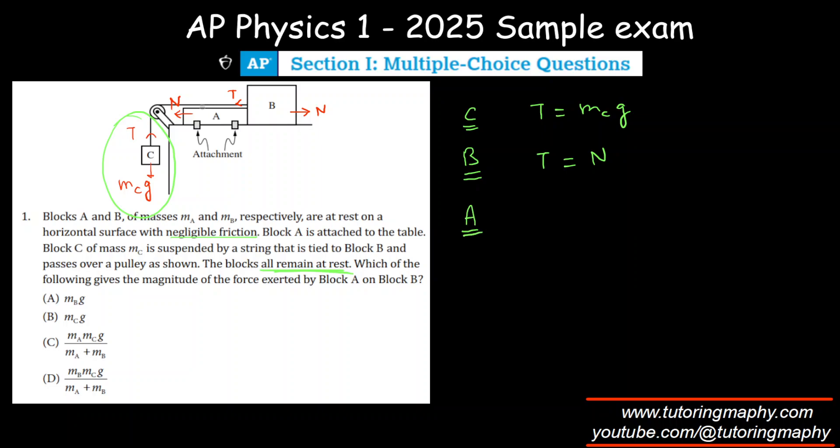And at A, actually, you know what? A is not required, I would say, because we just need to find the normal. So don't you think from these two equations, I can just substitute this T equal to N in equation number one. So I'm going to get N is equal to MCG. That's all what they needed, right?